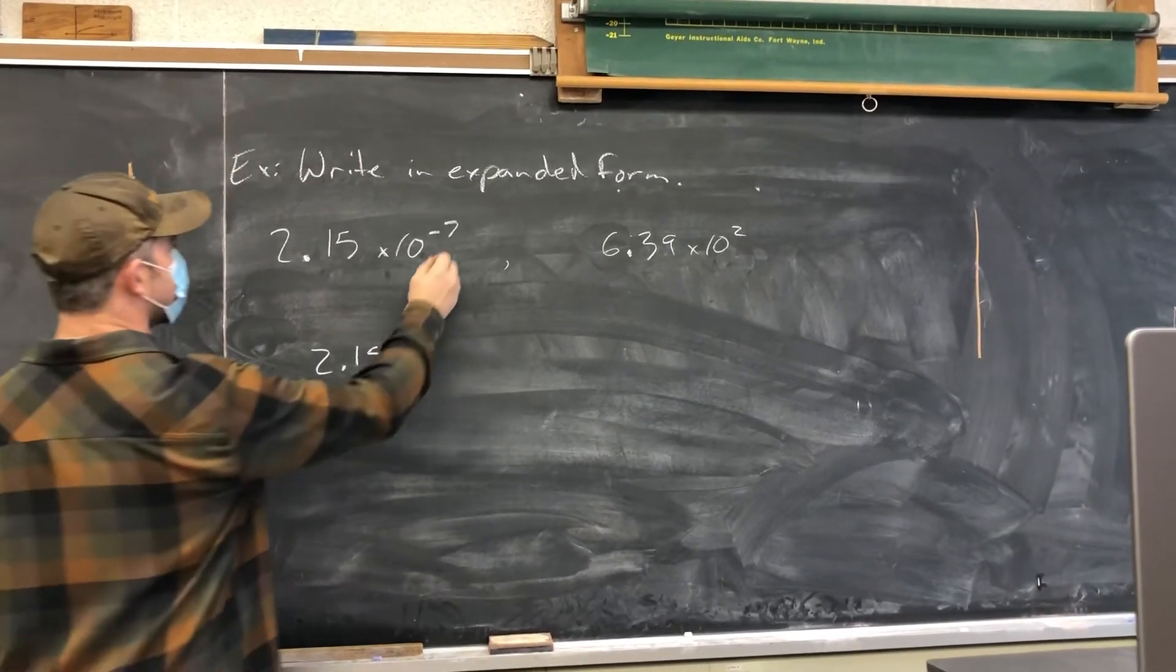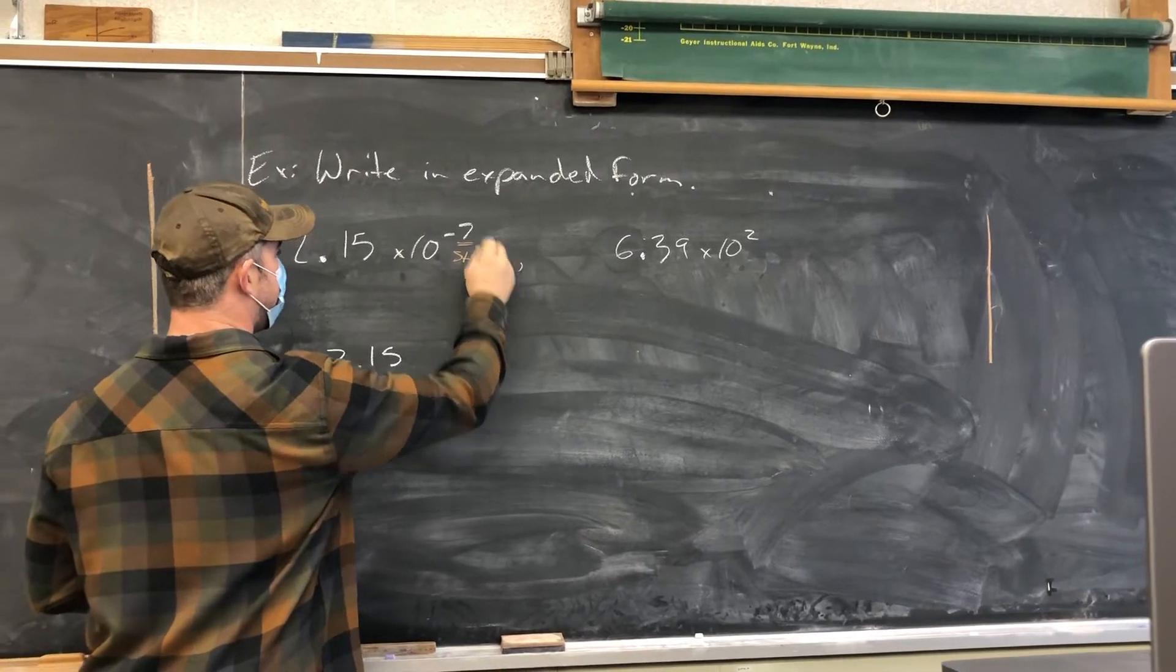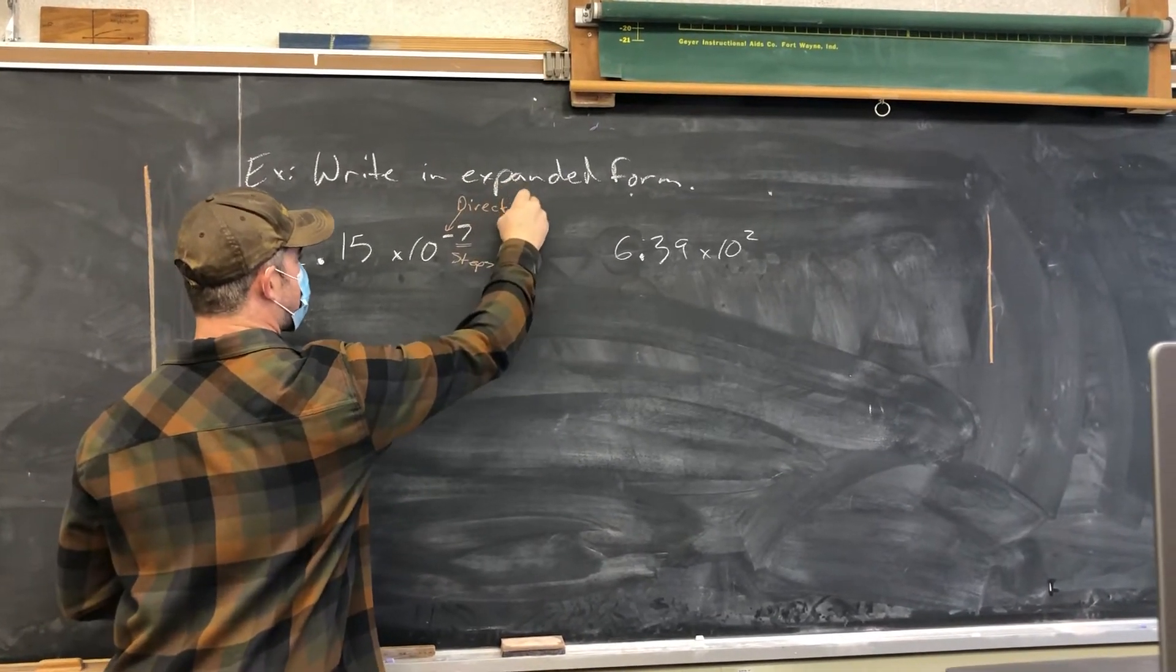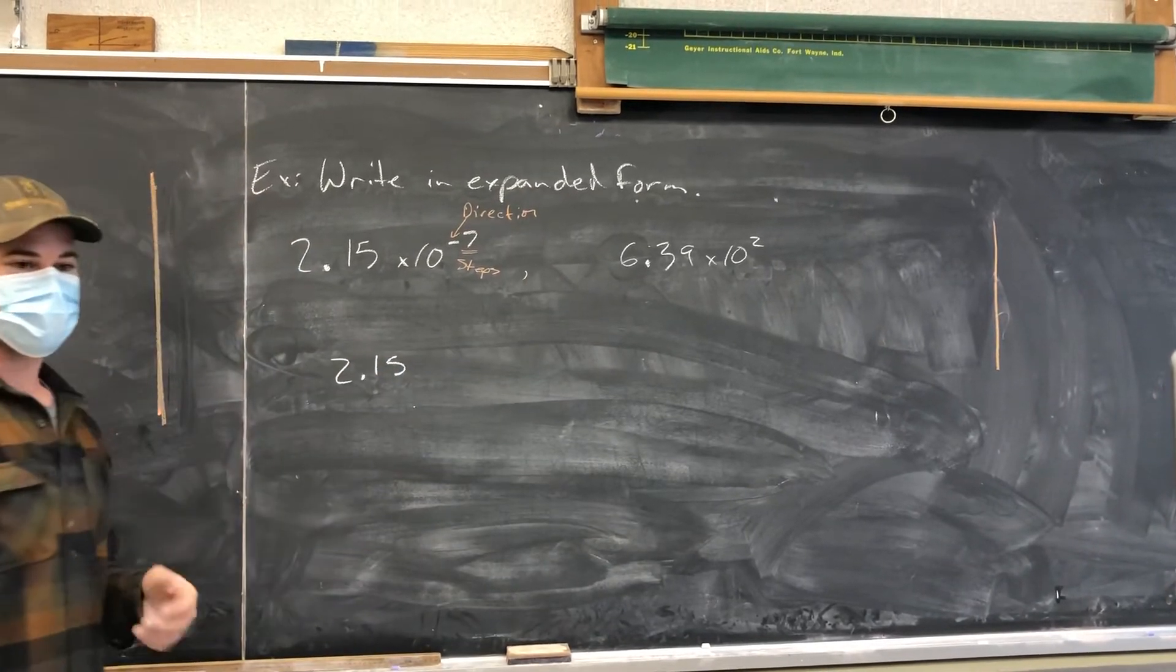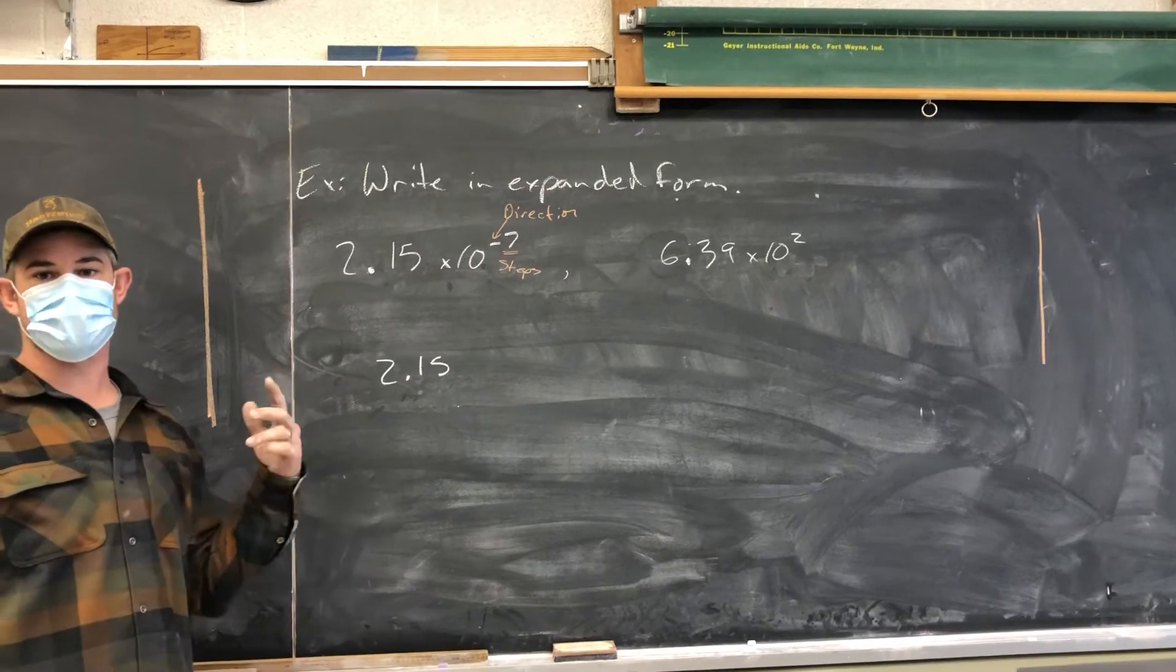Next, I take a look at the exponent and it tells me the number of steps that I'm going to take and the direction that I'm going to take. So because this is negative, my direction is actually going to be to the left because this number is going to be smaller.